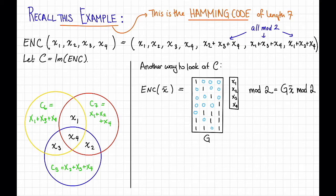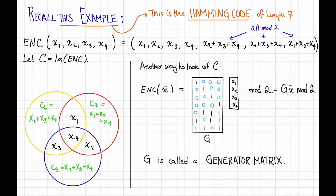The matrix G is called a generator matrix. We'll see a formal definition in a future video, but informally, a generator matrix is a matrix so that you can think of the encoding map as multiplication by that matrix.